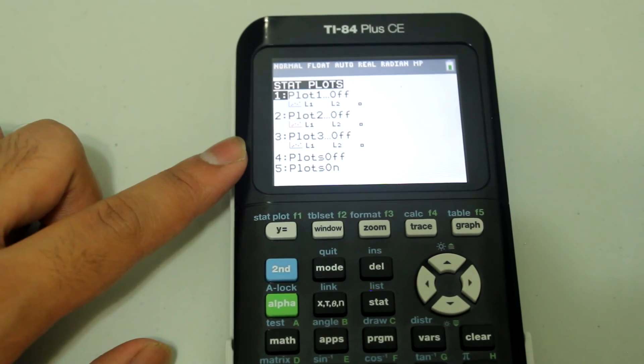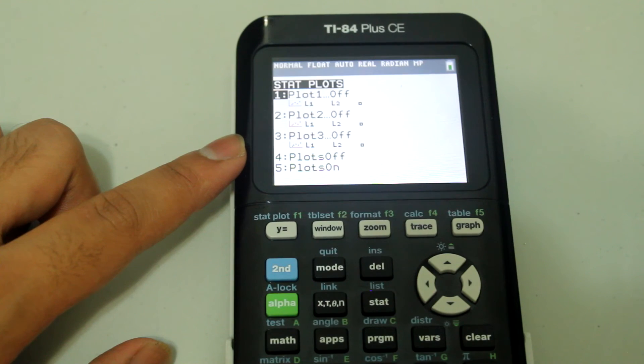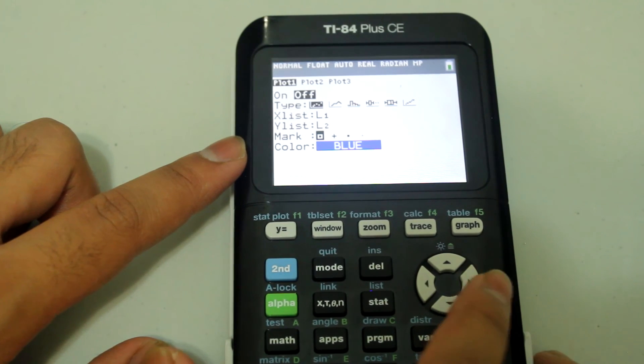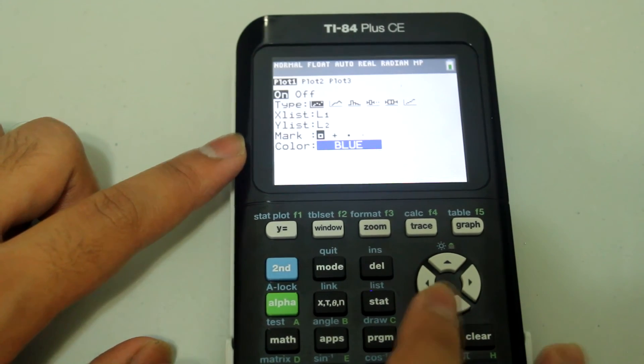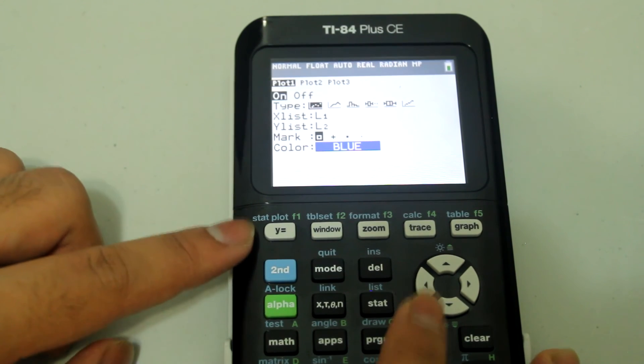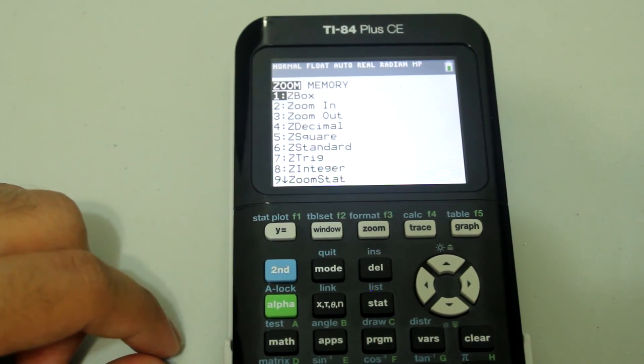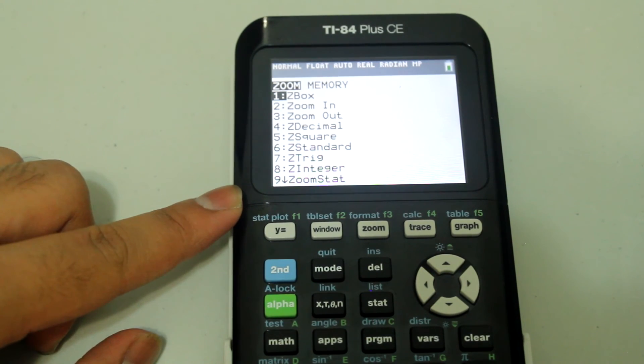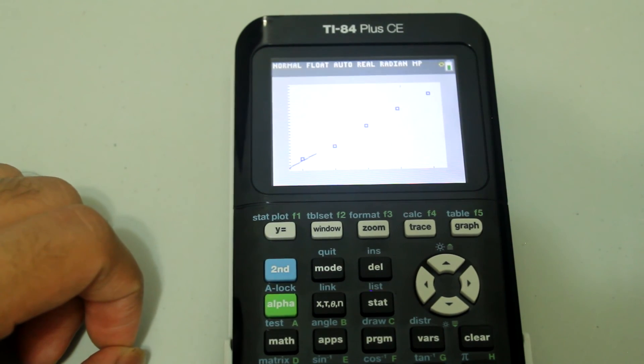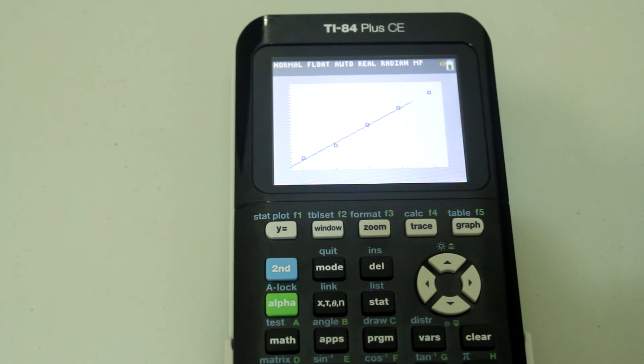And now we want to turn the first plot on. So go to the first plot and turn that on. Turn it on and make sure it's in a scatter plot. And then going to zoom and either hit number 9 or arrow down.